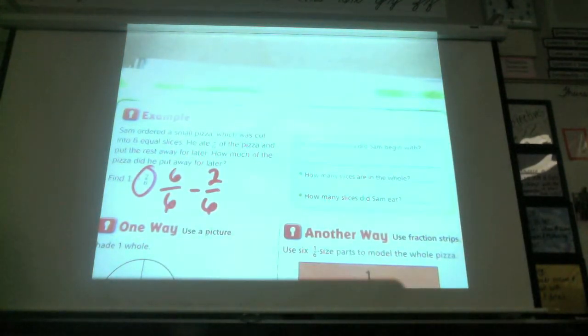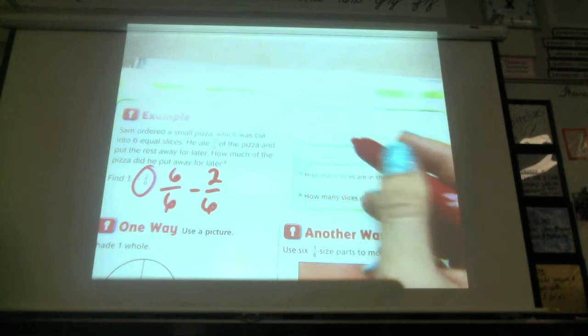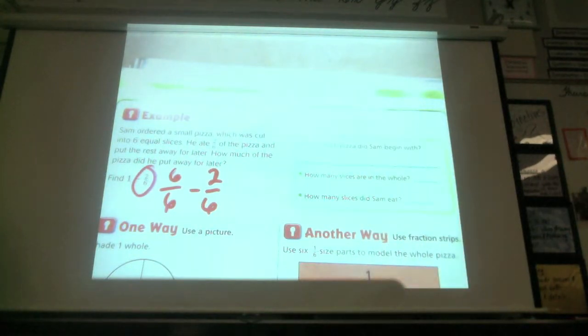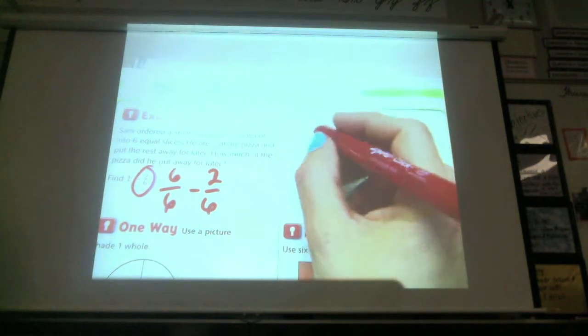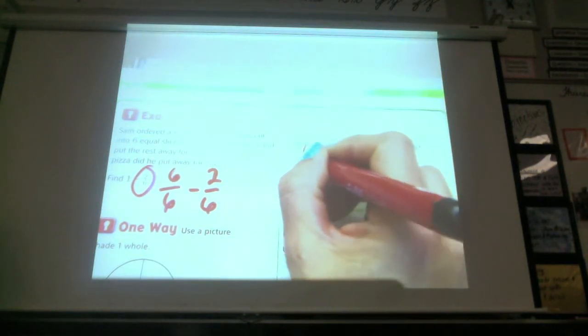So we can change that whole. Remember we talked about this the other day. You can change the whole into whatever fraction you want it to be, whatever denominator you want it to be, but then whatever denominator you pick, you have to pick the numerator that has to be what? The same. The same, exactly. All right, so how much pizza did he begin with? Six. Daniel. Six-sixths. Six-sixths or? One whole. One whole.